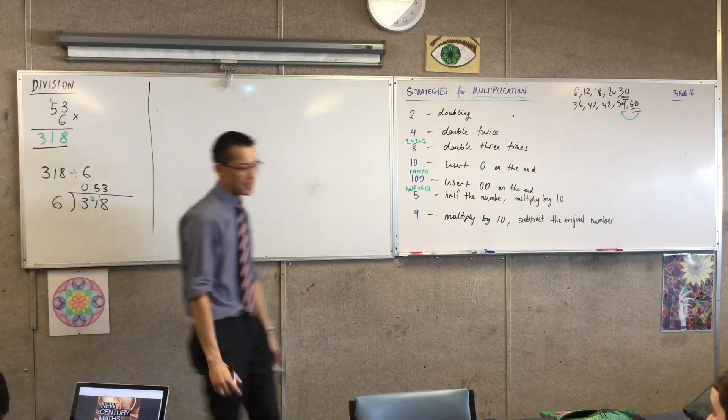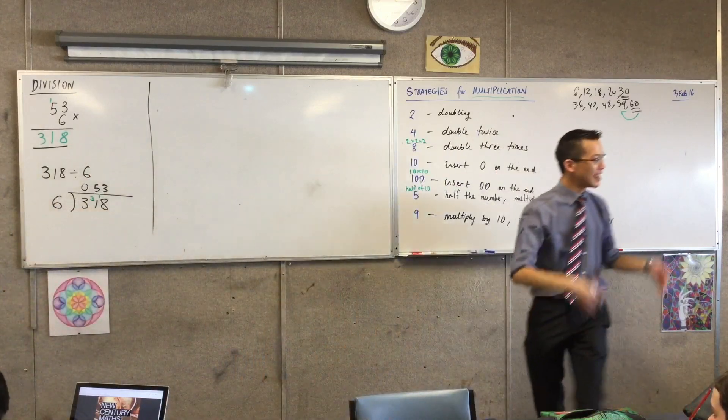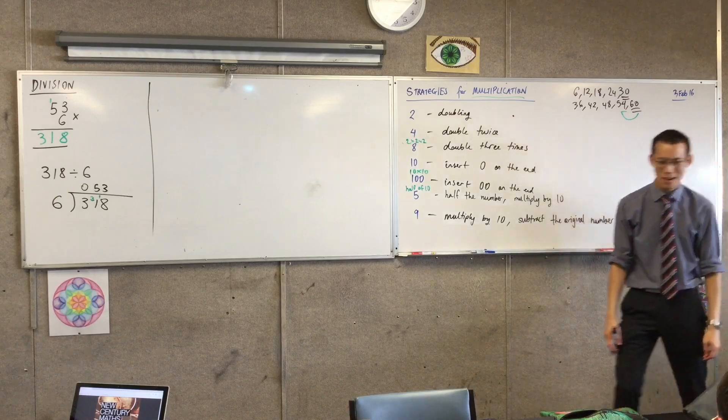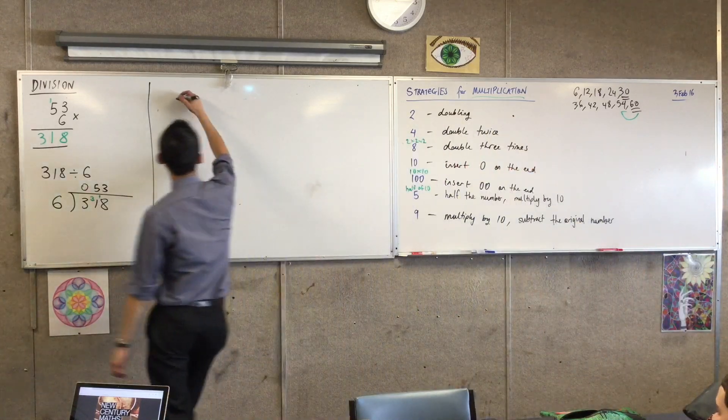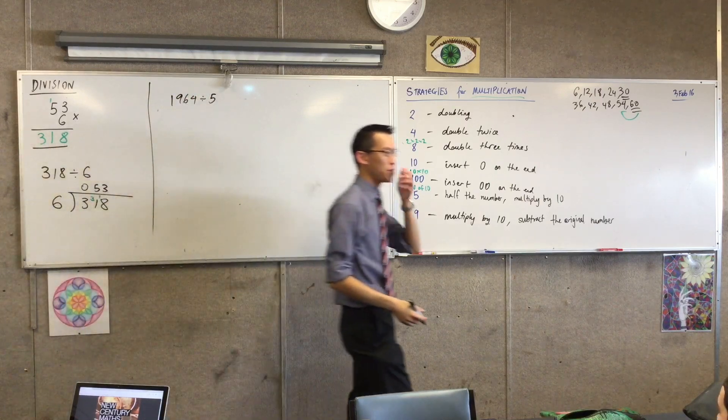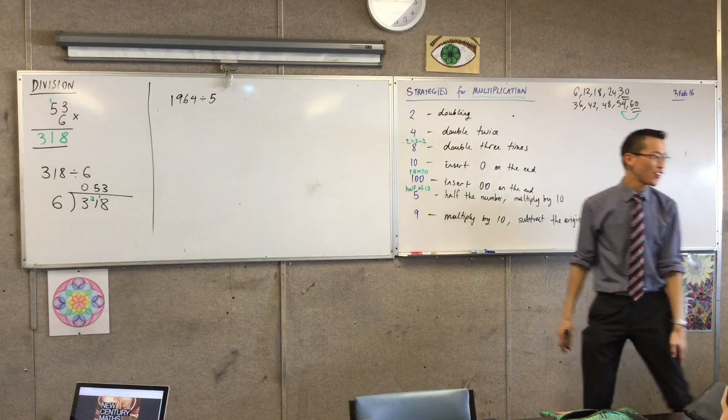Now let's extend this a little bit. This is a nice number. It went in evenly, divided perfectly. But not all numbers will do this. So let's have a go at this. Some of you might be able to see